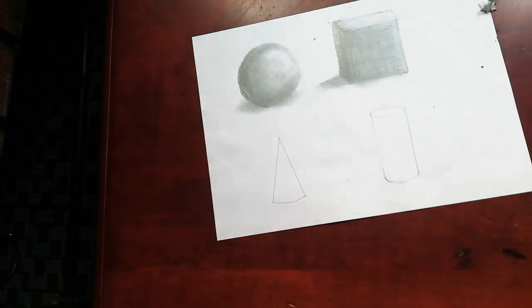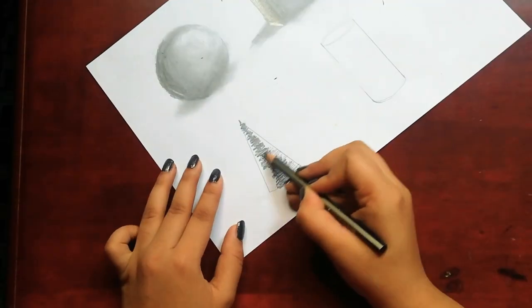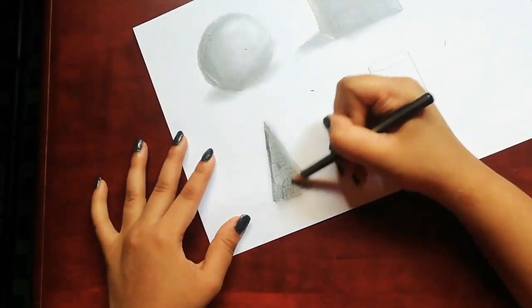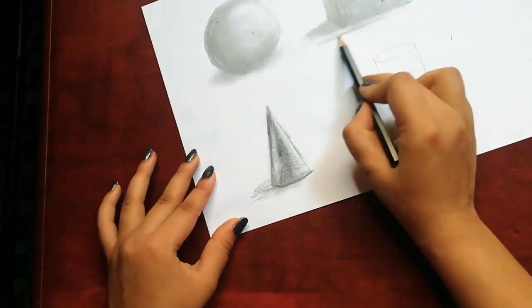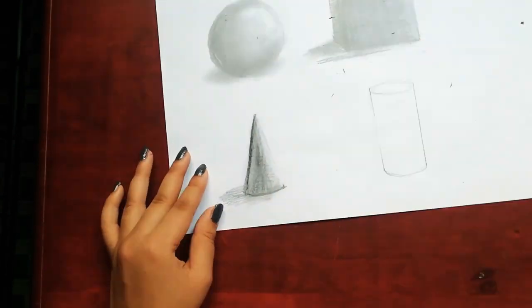Here I have a cone. There'll be three sides to this: first the highlight, the midtone, and the core shade.